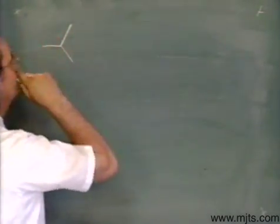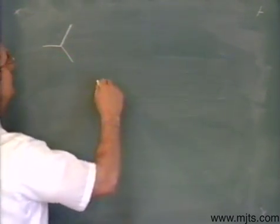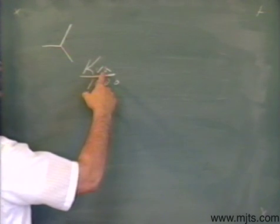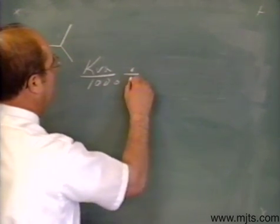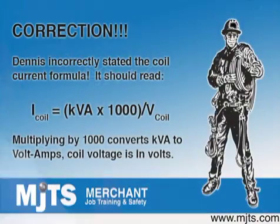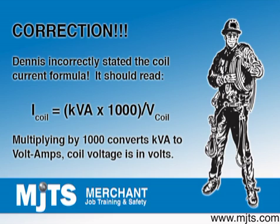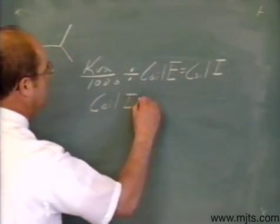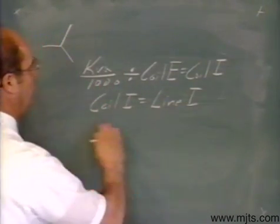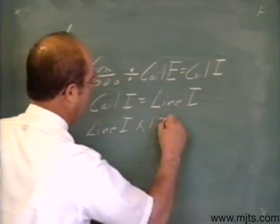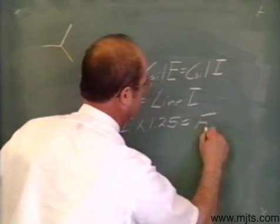To find our fuse size, the formula that you would use for the Y system: we'll take our KVA and divide it by a thousand. What that's going to yield is my volt-amps, which is my unit of measure of power. I'm going to divide by my coil voltage and that'll equal my coil current. Our coil current with our Y system is going to be equal to our line current. In all cases when you're figuring a fuse size, you're looking for that line current. Line current times 1.25 will be equal to our fuse size.